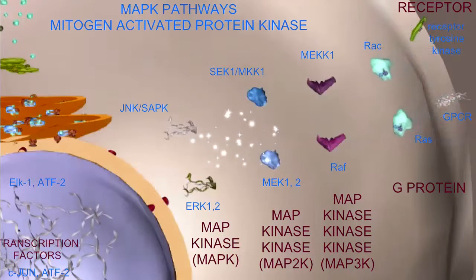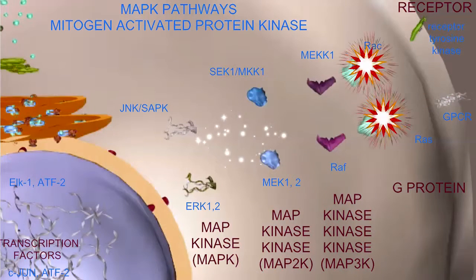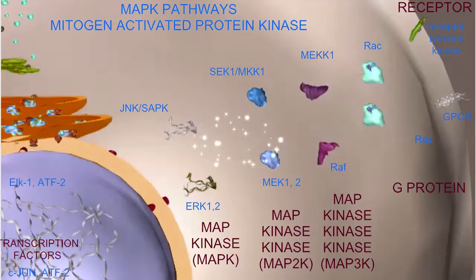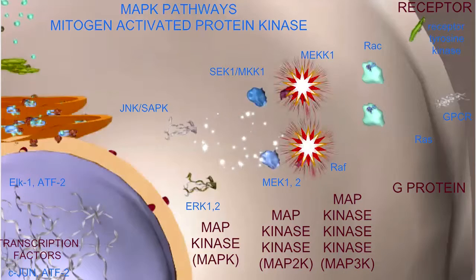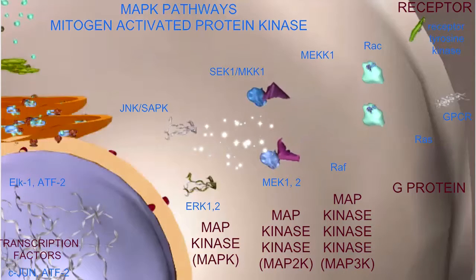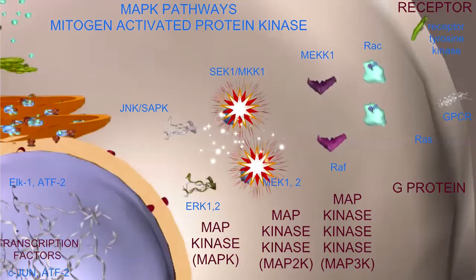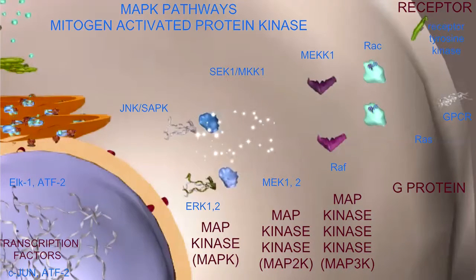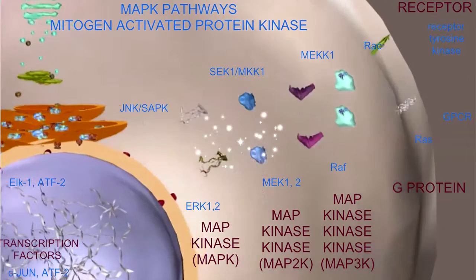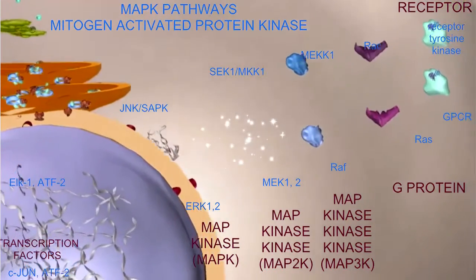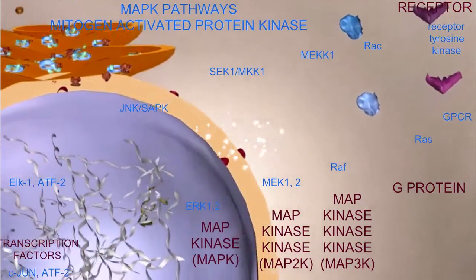Because of the diversity of roles that normal proto-oncogenes play in the control of cell division, there is a great diversity in the roles that the cancer-causing oncogenes may cause.